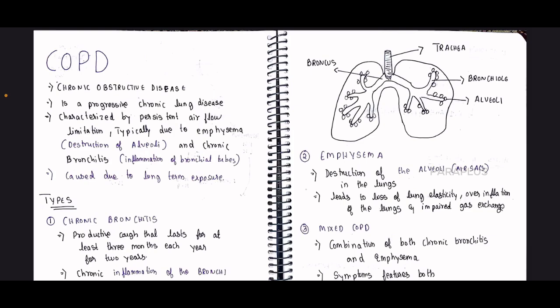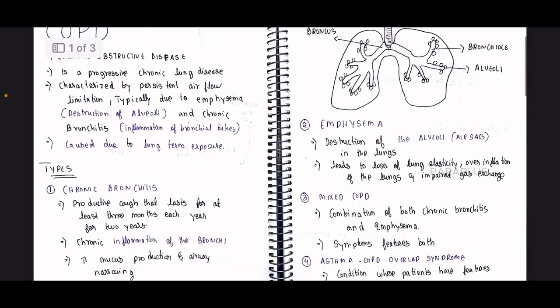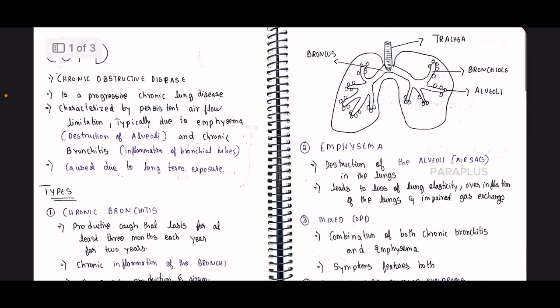In short, COPD is two types of conditions: emphysema and chronic bronchitis.